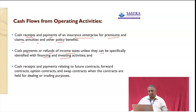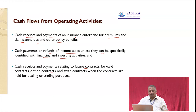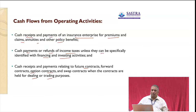Income tax refunds increase the cash position and should be considered. However, it needs to be clearly understood whether income tax is part of operating activities or investing and financing activities. Cash receipts and payments related to futures contracts, forward contracts, or option contracts can be a primary source of revenue for trading firms predominantly dealing with these types of contracts. We need to carefully understand whether each item is part of operating, investing, or financing activities.